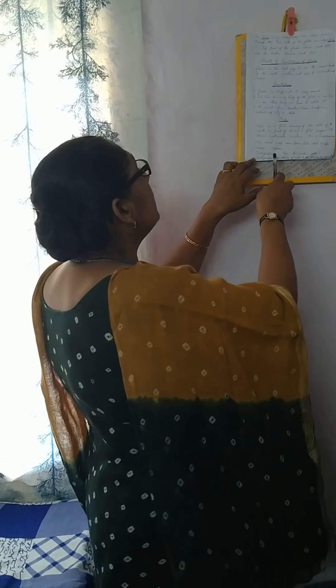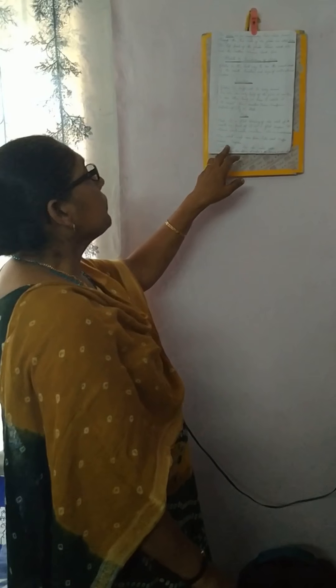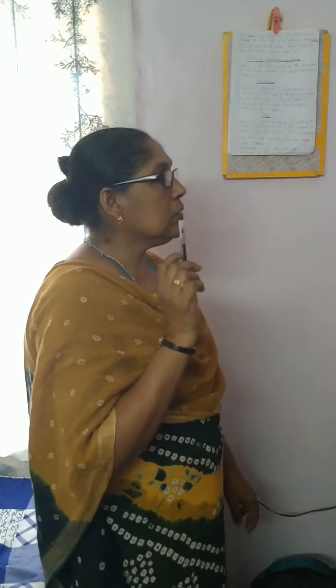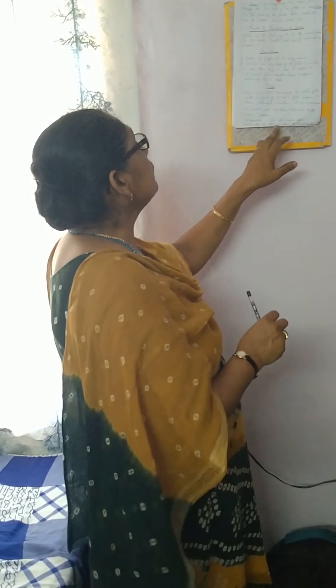The word 'map' came from the Latin word 'mapo,' which means napkin — and you know that a napkin can be folded. One who makes a map is called a cartographer. The process of making maps, or the study of maps, is called cartography.